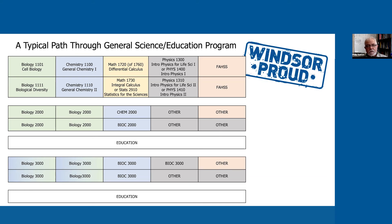So that's a typical first year for a General Science student: biology, chemistry, math, and physics. You can move other options into the first year as well — you don't even have to take physics in the first year if you want to take some easier courses and then move physics into another year.